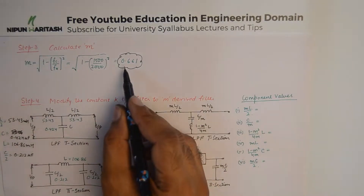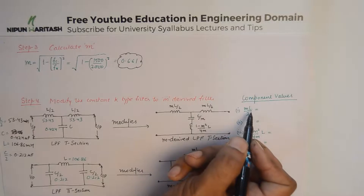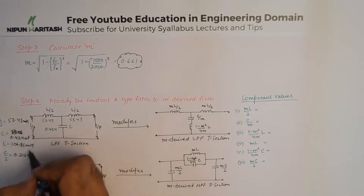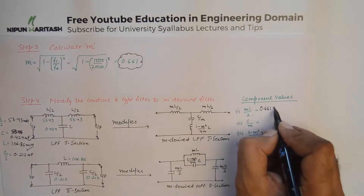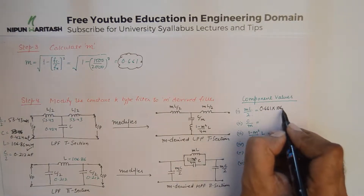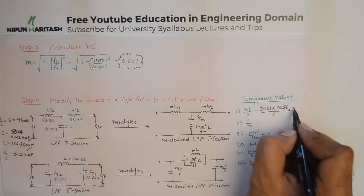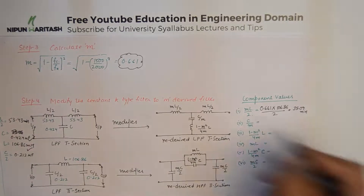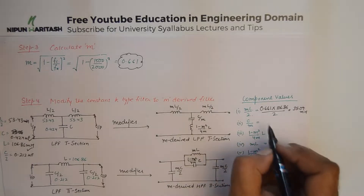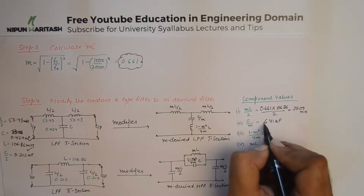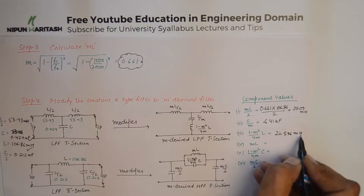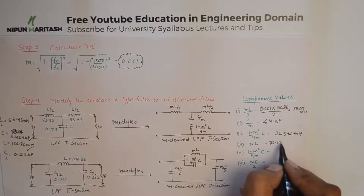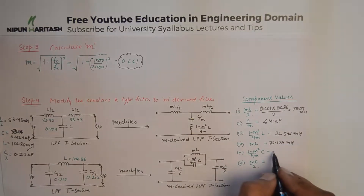Substituting m = 0.661 with the previously calculated values of L and C: 0.661 × 106.86 / 2 = 35.09 millihenry. You can calculate the remaining values at your own pace. Another key value comes out to be 22.596 millihenry. This is a tedious process requiring careful calculator work, but it must be done correctly to obtain the right answer.